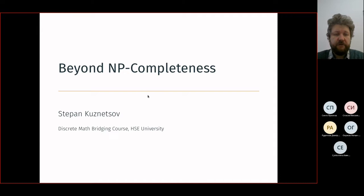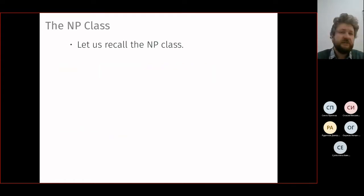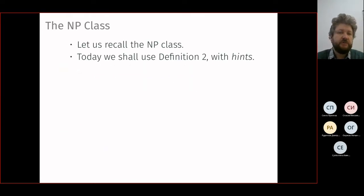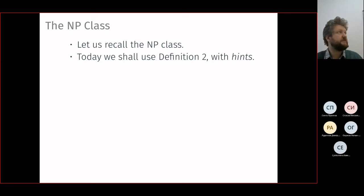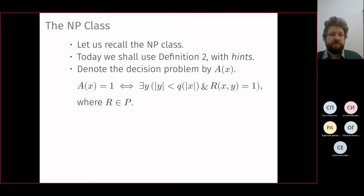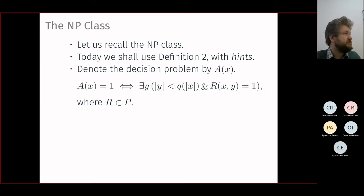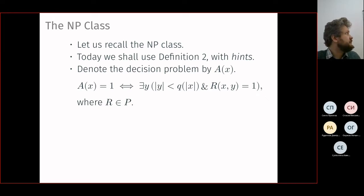Before going forward, let us recall what the NP class means. We use what we call the definition with hints. This definition is more convenient but does not fully reflect the idea of being non-deterministic — the 'N' in NP — where 'P' is for polynomial. A decision problem A(x) takes some finite object encoded as bits, and the result is just one bit: zero or one.